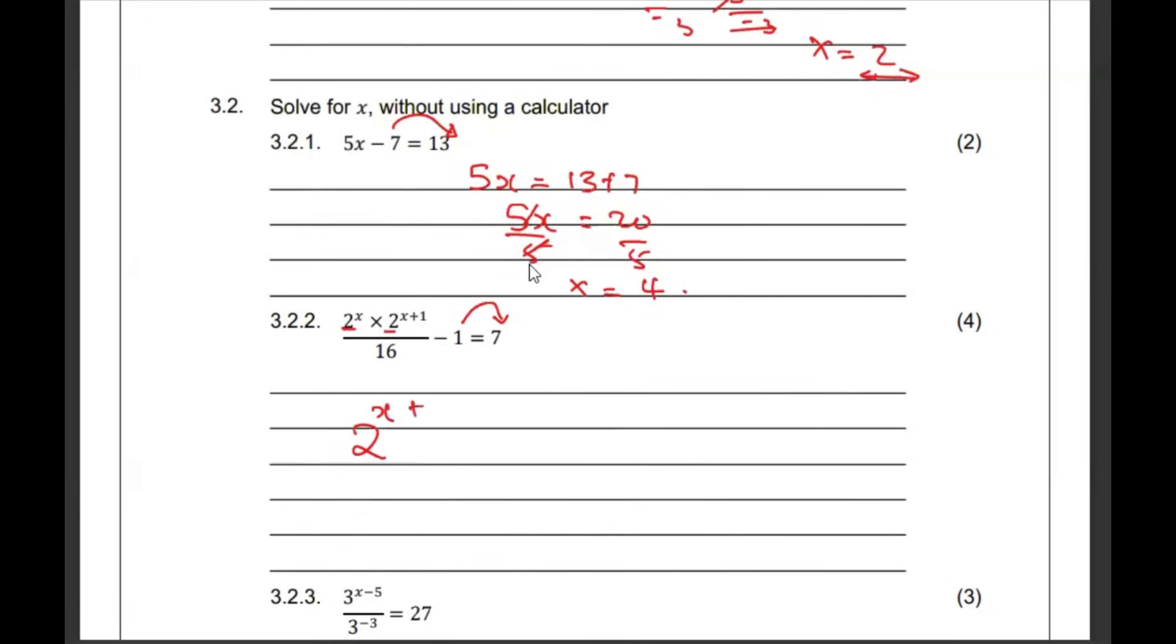Then we're dealing with exponents. These bases are the same. We just need to plus up the exponents. So, 2x plus x plus 1 over 16. We said it's 7 plus 1, which is 8. Then we can change this 16 to a base of 2, which is 2 to the exponent of 4. And then we subtract it from the top. So, that it is 2x minus 3. Then 8 can be written as 2 to the exponent of 3. Drop the bases. 2x minus 3 is 3. 2x is 6. x becomes 3.